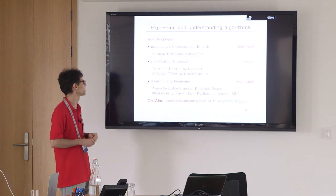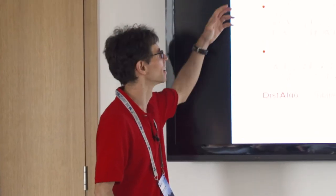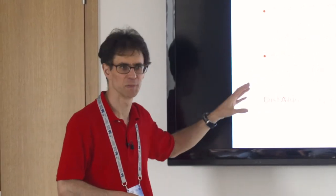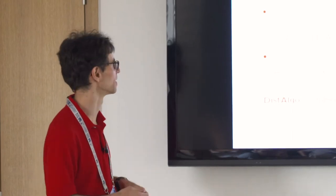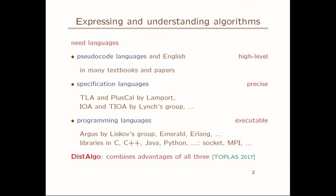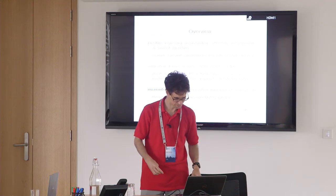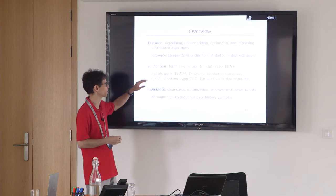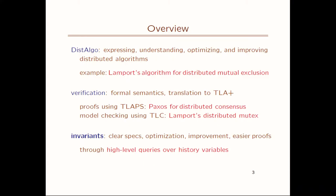As far as writing the algorithms themselves, there's a spectrum between pseudocode languages, which are designed to be easy to read but are not executable, and programming languages, which are executable but not as readable — there are lots of details. Then there's something in the middle: specification languages. We tried to design a language that would be higher level than existing languages for writing distributed algorithms, and be executable, and be convenient for verification. Our language is called DistAlgo.